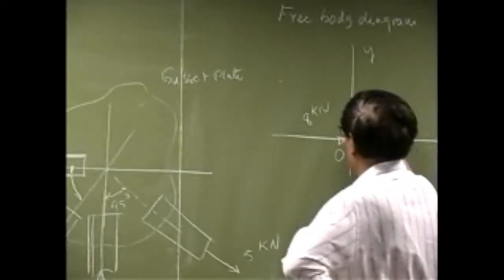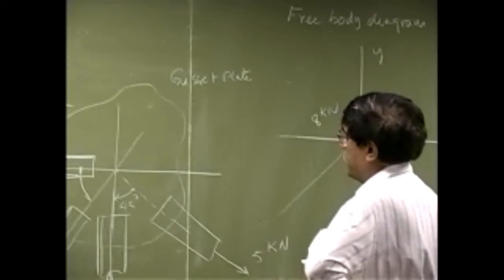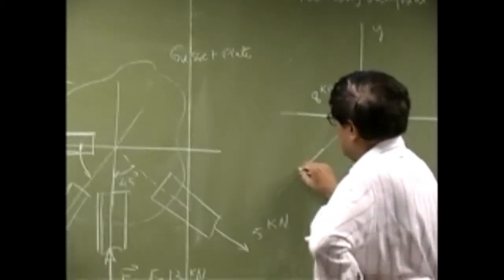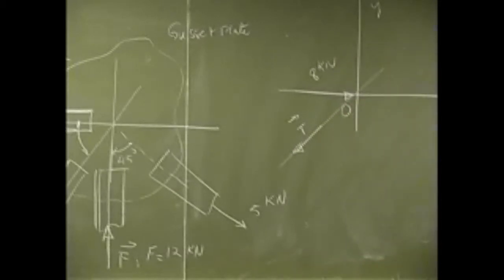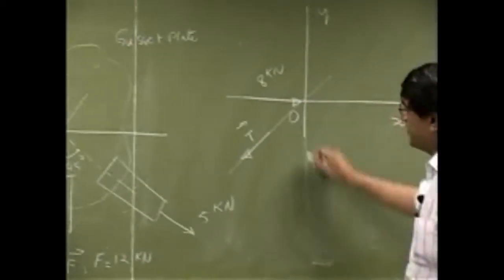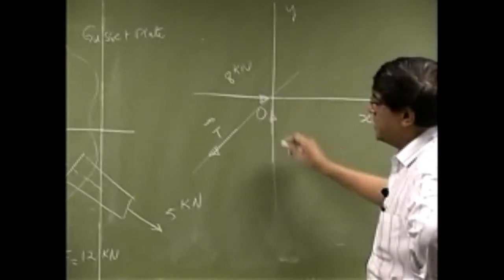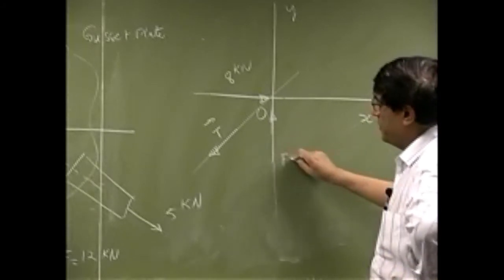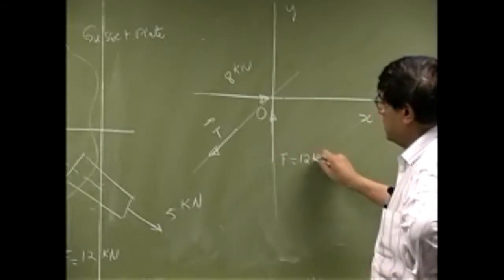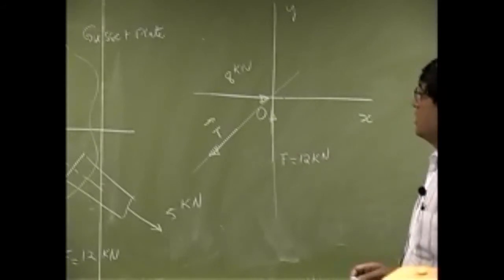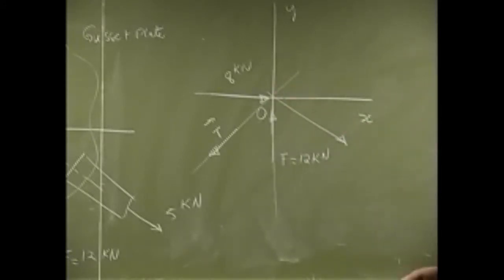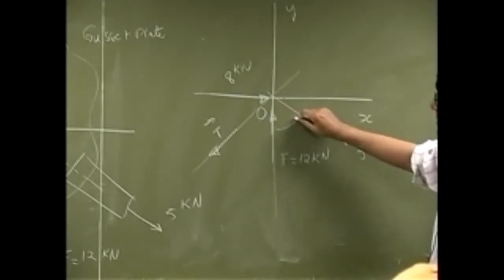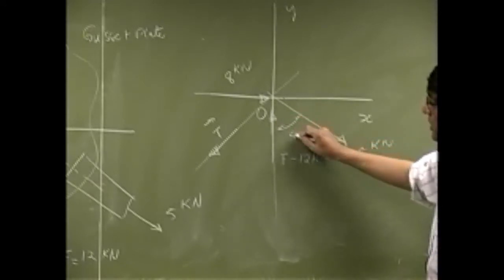Then we draw the second member and the force here is T. Then we draw another member and the force in that direction is F as 12 kN. Then we got another force here, we call this as 5 kN and it's acting at 45 degrees.